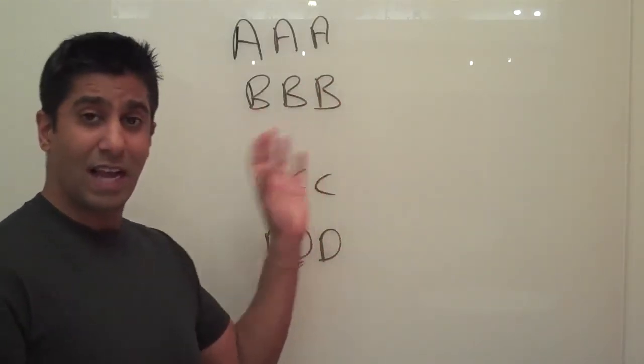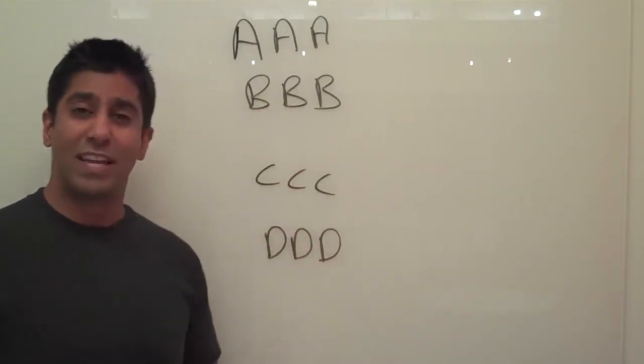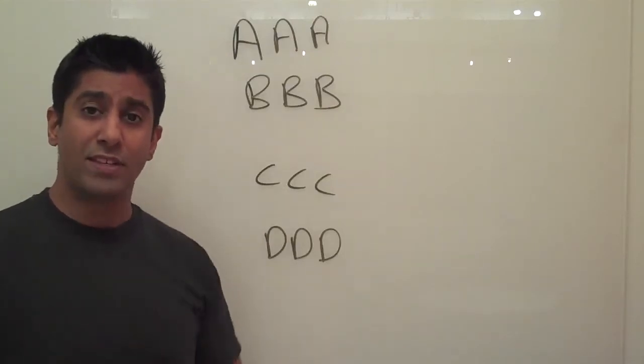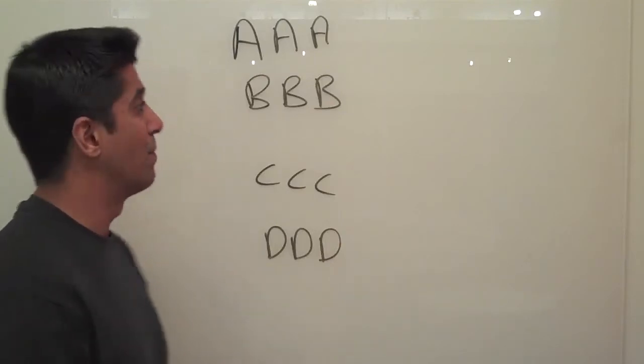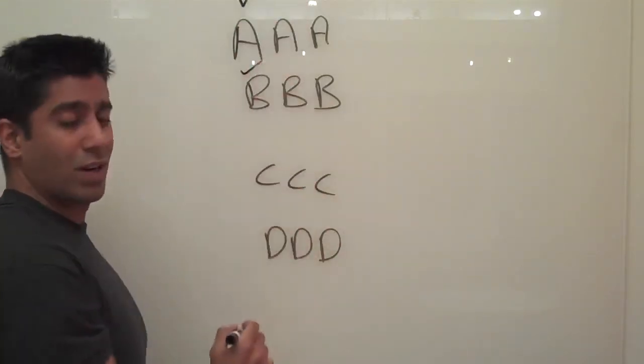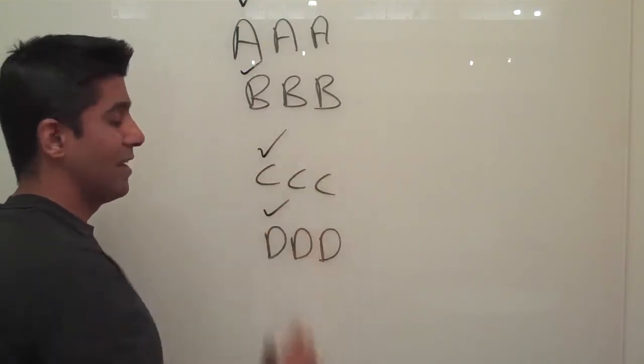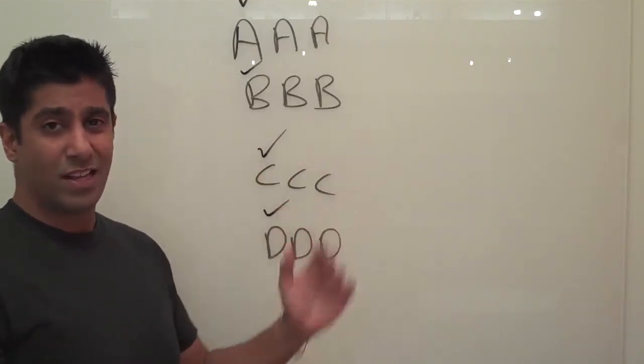The reason I've got three letters for each of these is I want you to assume it's going to take you three months to complete each of these projects. Now this is how most entrepreneurs approach the projects that are on their table. In January they'll work on project A, February they'll work on project B, March they'll work on project C, and April they'll work on project D. Four months into the year, nothing's complete.